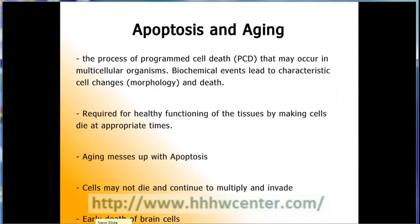Age also interferes with an important process called apoptosis, which programs cells to self-destruct or die at appropriate times. This process is necessary for tissues to remain healthy, and it is especially important in slowing down immune responses once an infection has been cleared from the body. Different diseases that are common in elderly people can affect this process in different ways. For example, cancer results in the loss of apoptosis.